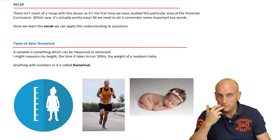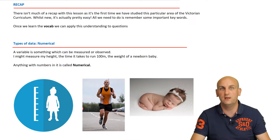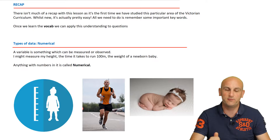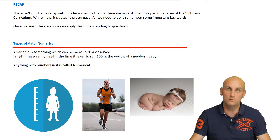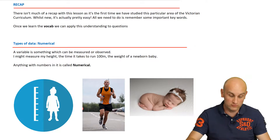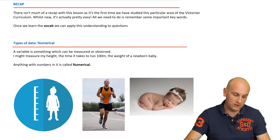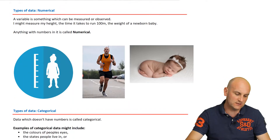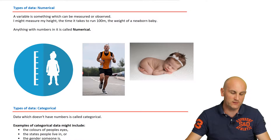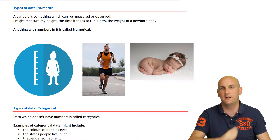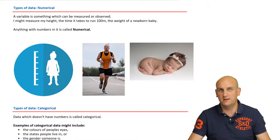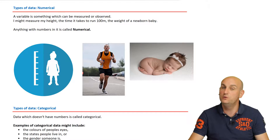As I'm doing this video, if you've got a piece of paper and a pen handy, write down the important words — it will really help you. Now, the first thing we're going to deal with: there are two types of data. The first one is numerical data.